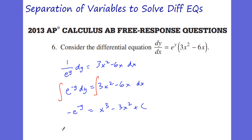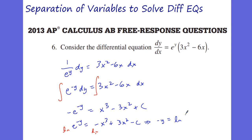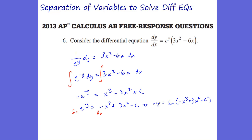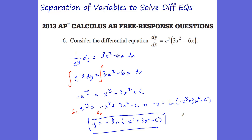Now I'm going to do some algebra to get y by itself. We have e^(-y) equal to -x³ + 3x² - C, moving the negative to the right-hand side. Now I'm going to take the natural log of both sides to move that e over algebraically. So we have negative y equals natural log of (-x³ + 3x² - C). Therefore y equals negative natural log of (-x³ + 3x² - C). That is my solution to my differential equation using separation of variables.